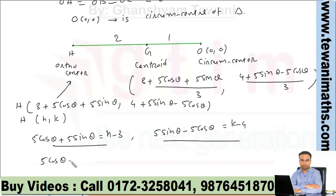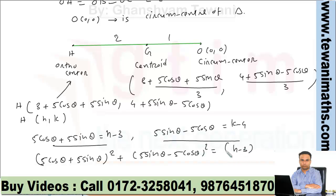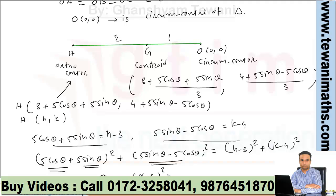Squaring and adding both equations: 25cos²θ + 25sin²θ + 25sin²θ + 25cos²θ = (h-3)² + (k-4)². The middle terms cancel out, giving us 50 = (x-3)² + (y-4)². So the locus of the orthocenter is a circle.